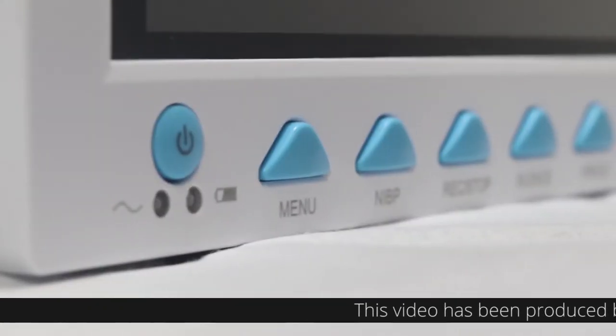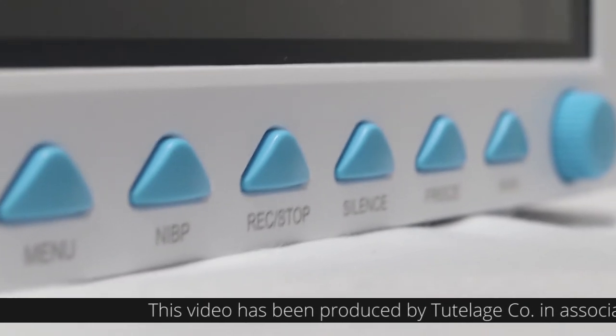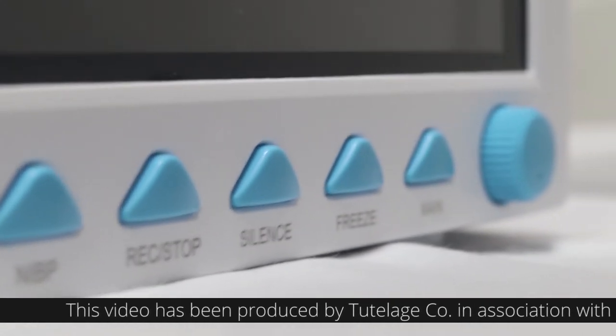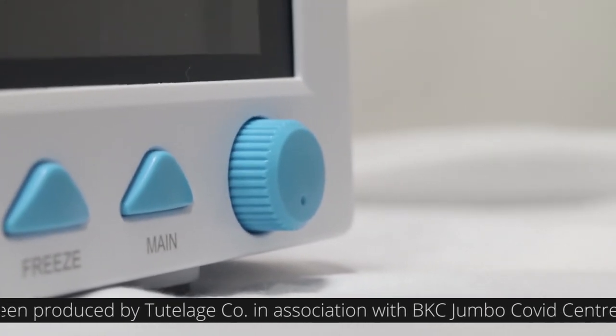The front panel has the display, below which there is a power button, the operations buttons: menu, NIBP, record or stop, silence, freeze and main, and a rotary knob.